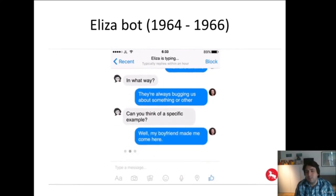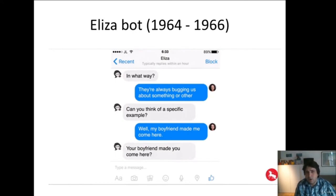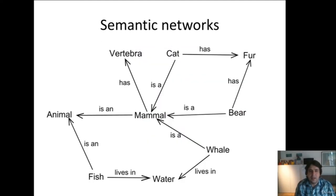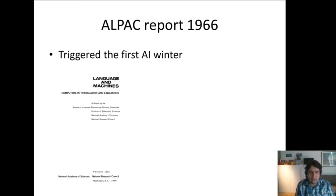Eliza was quite impressive, especially since it could hold a conversation almost indistinguishably from a human for a certain amount of time. At the same period, semantic networks were created — networks where you can do reasoning. For example, you can say that a bear and a whale are similar because they are mammals, and therefore a bear is an animal, even though there is no direct connection between bear and animal — only an indirect one.